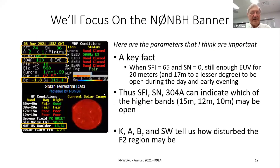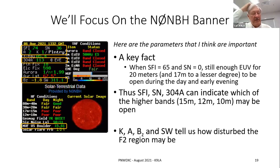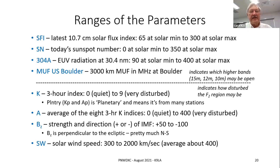The MUF US Boulder parameter is the maximum usable frequency over the Boulder ionosonde, assuming it's the midpoint of a 3,000 kilometer path. You can see that yesterday at 1332 UTC — which was about 7:30 in the morning Mountain Time — 20 meters should have been open with Boulder as the midpoint of a 3,000 km path. That's a good indication of what's happening because it's an actual measurement of what the ionosphere is doing.